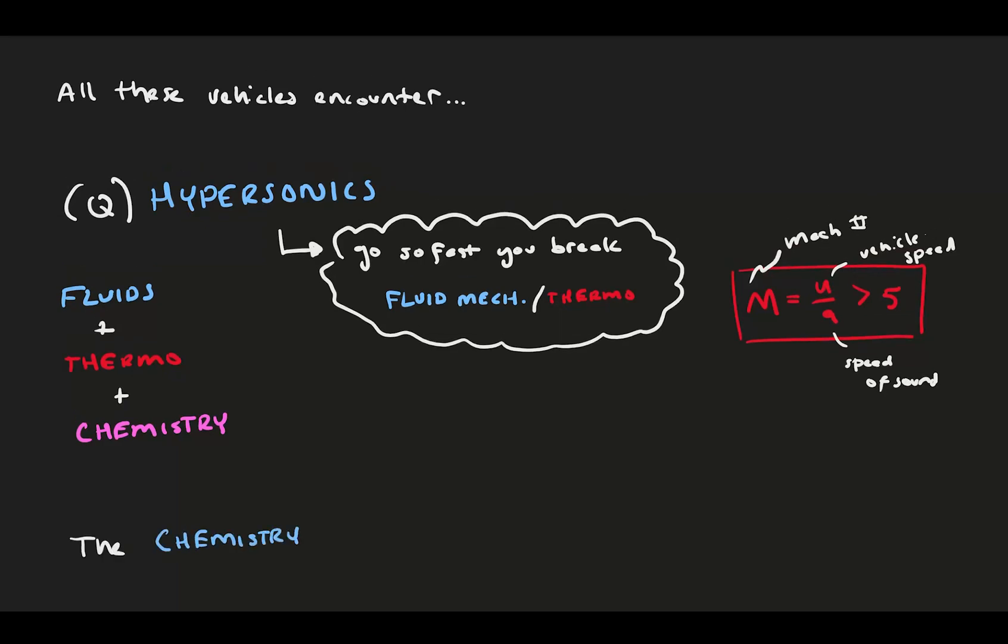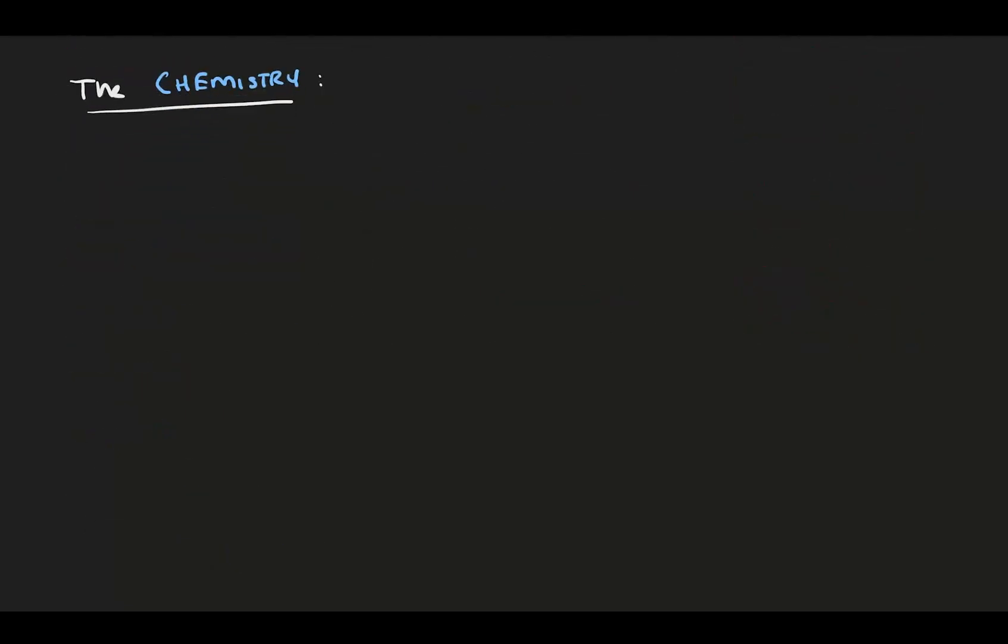So first, we consider the chemistry. We typically view air as a continuous, perfect gas. But air is made up of a bunch of molecules that are all bouncing around. Statistically, air is 78% N2, a diatomic pair of nitrogen atoms, and 21% O2, a diatomic pair of oxygen atoms.